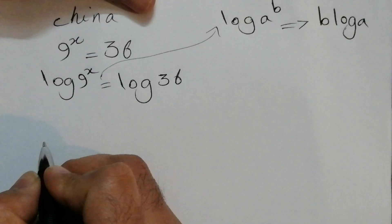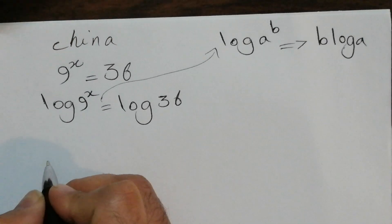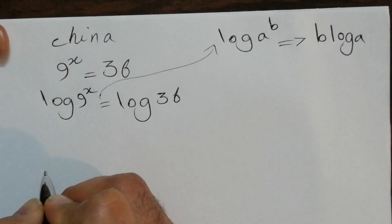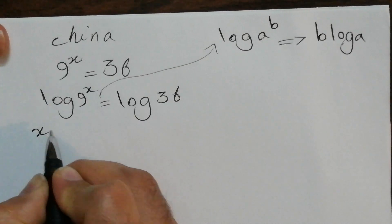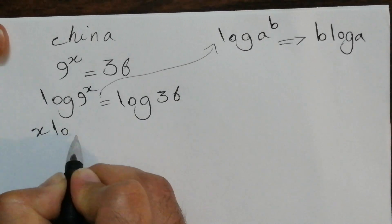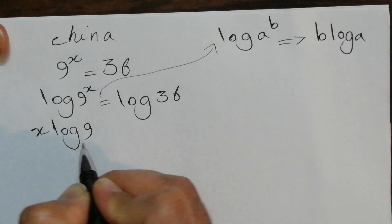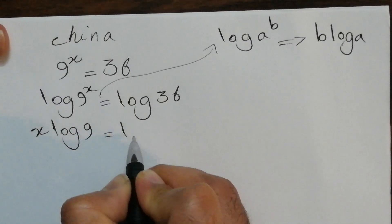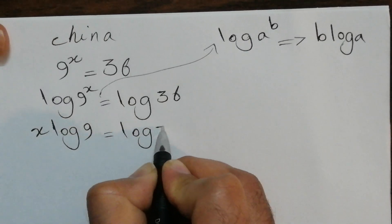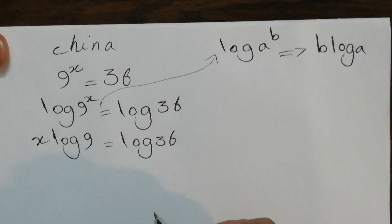Here we can write it the same, so there is no difference. We can write x times log 9 equals log 36. So what's next here?